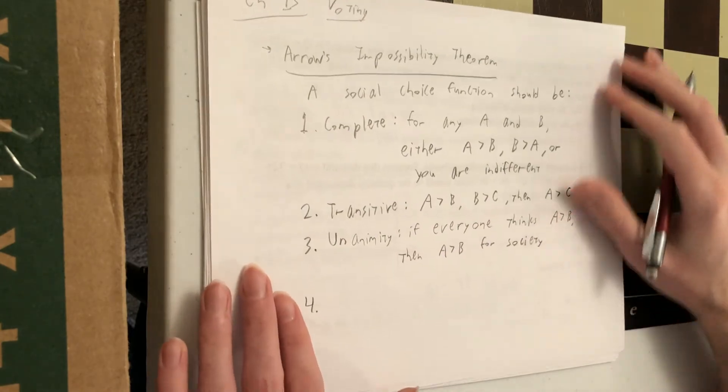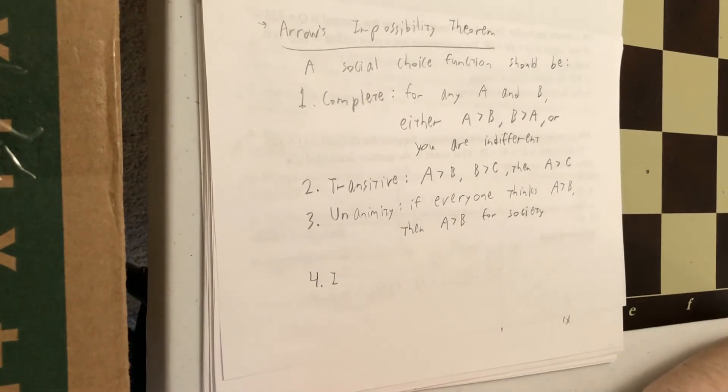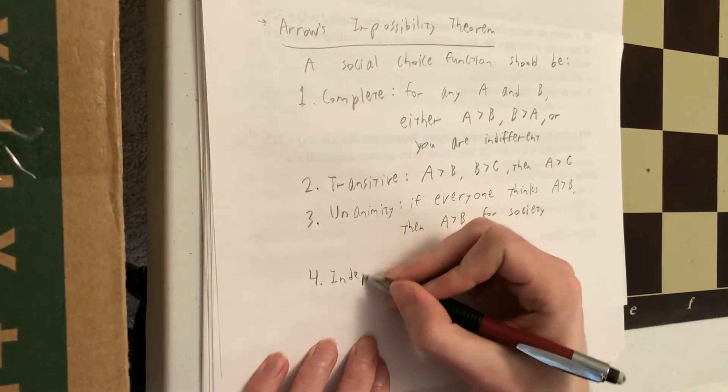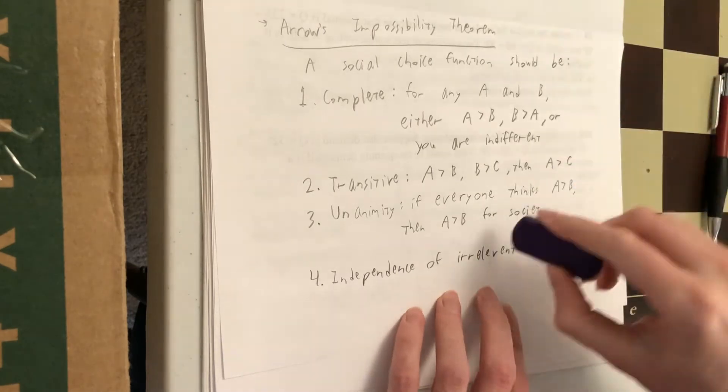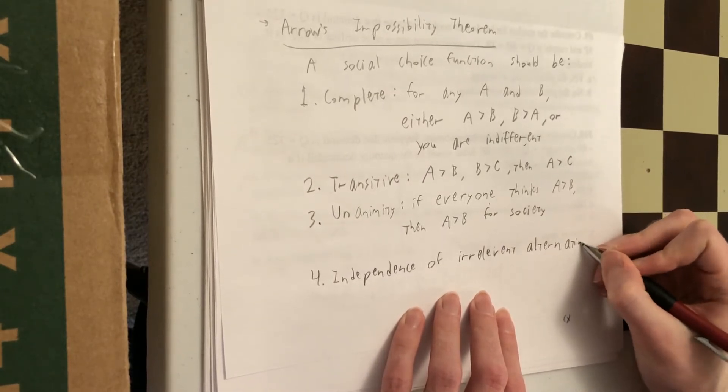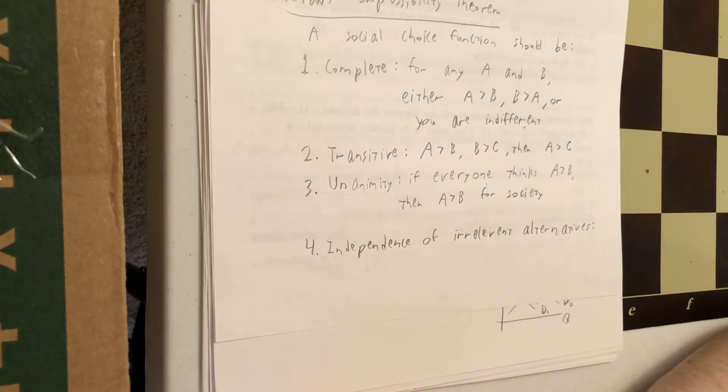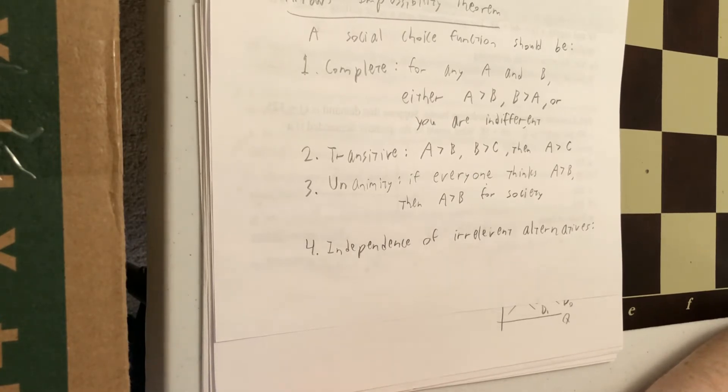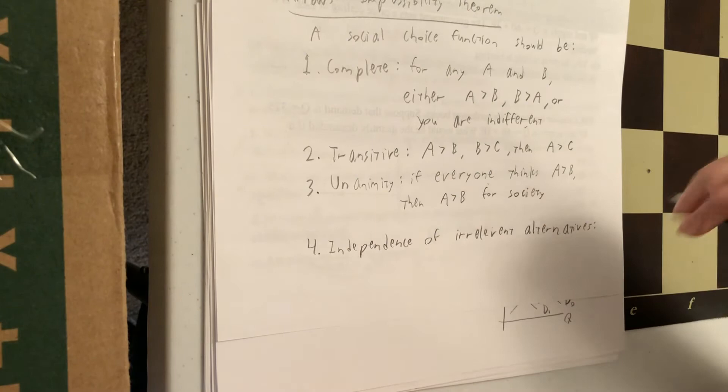Fourth requirement. This is called independence of irrelevant alternatives, or IIA. What that means is that, let's say you're comparing just A and B, and you decide through your election system or whatever that A is better than B. If you add C to the mix and are comparing A, B, and C, then A should still be better than B. Now, it's possible, of course, that C is better than both, but this irrelevant alternative C should not flip your preferences over A and B.